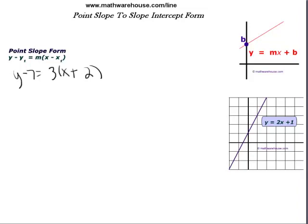Point slope to slope intercept form. The goal of this tutorial is to be able to take an equation in point slope form, like for instance y minus 7 equals 3 times x plus 2, and then convert that into slope intercept form.